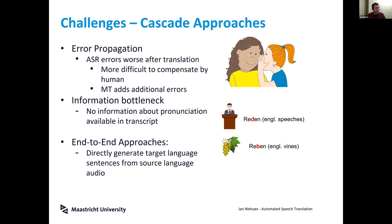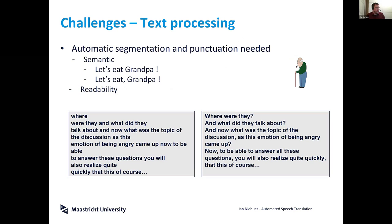In end-to-end approaches we try to collapse this cascade into one large model. A second large challenge, which we'll discuss more, is text processing: while the MT system typically assumes well-written text, this is not how people speak.